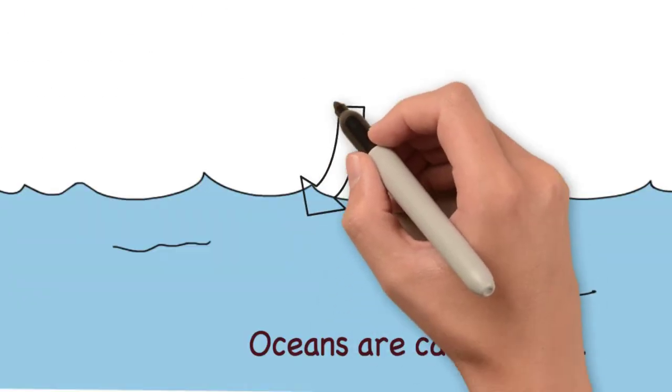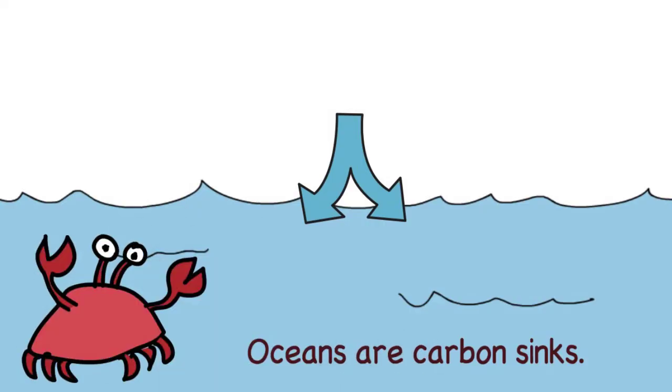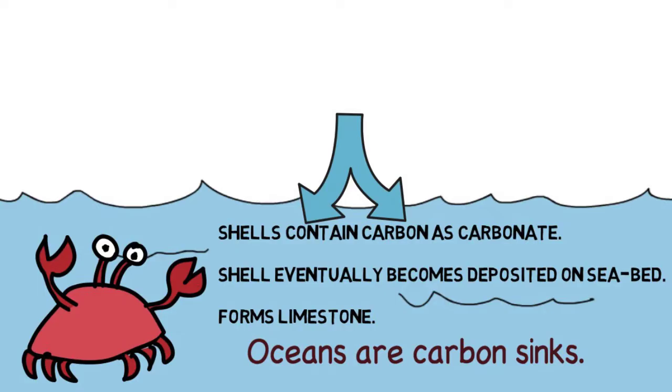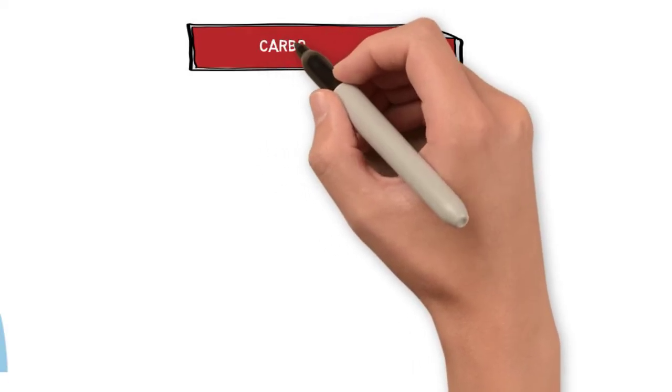It's also important to remember that carbon dioxide dissolves in the oceans. So oceans are referred to as carbon sinks. There's also a lot of organisms with shells that contain carbon as carbonate. And when these die, they get compressed and they form limestone. The weathering of limestone returns carbon as carbon dioxide to the atmosphere.